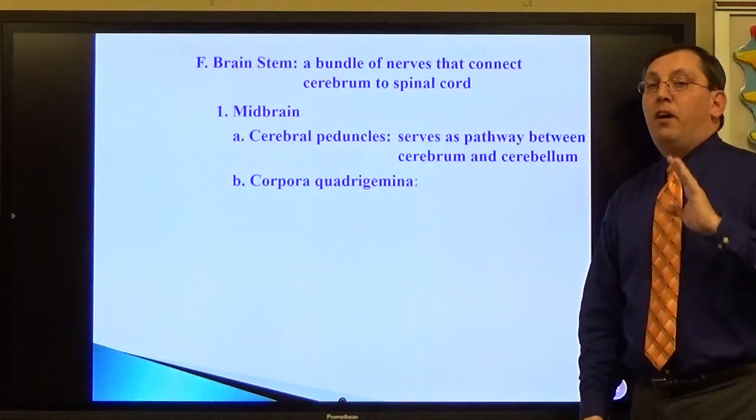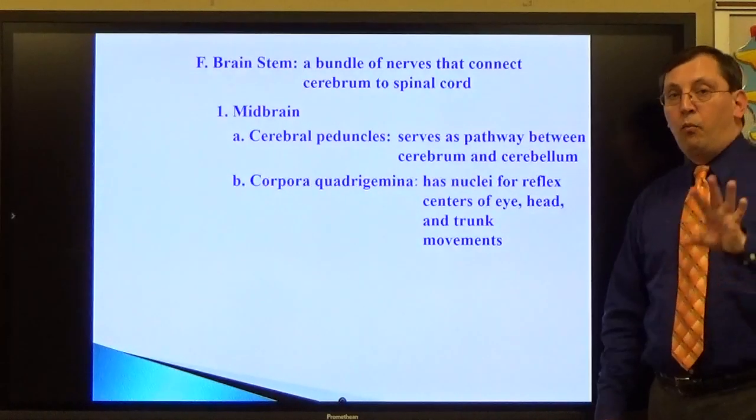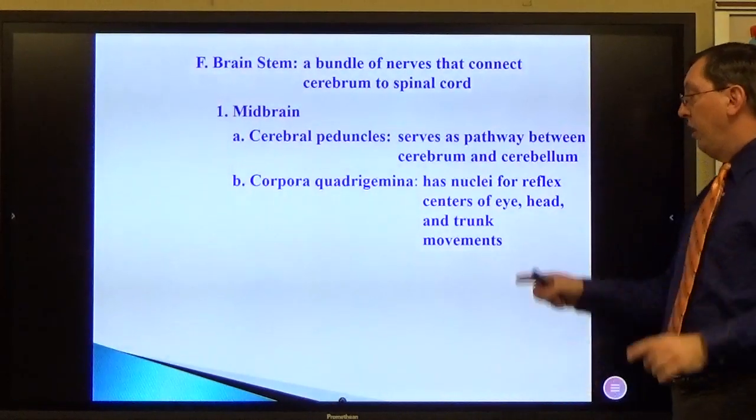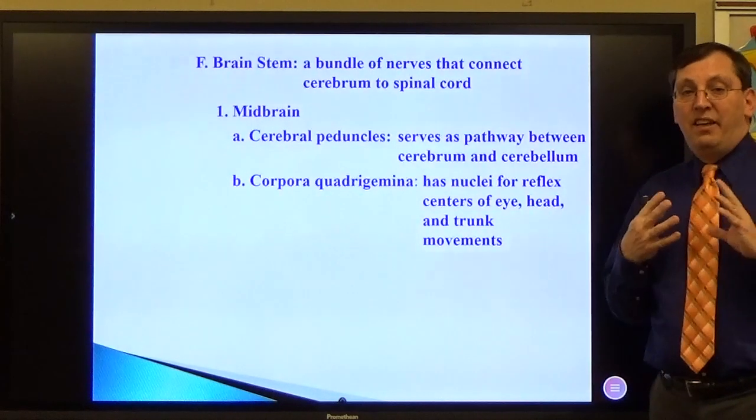The corpus quadrigemina, as it implies, there are four parts to it. It has the nuclei that run the reflex centers for the muscles that control your eye, head, trunk, and trunk movements. So it helps to move my body around as a reflex.